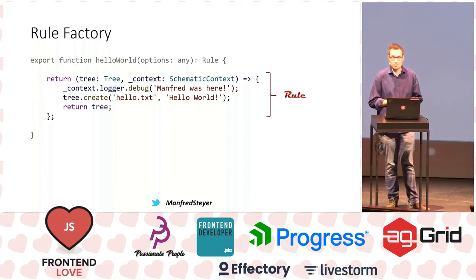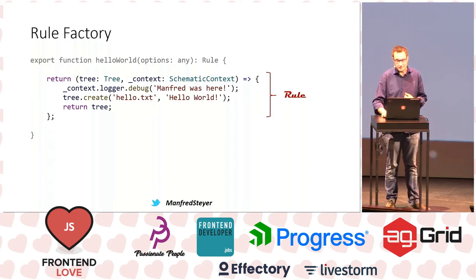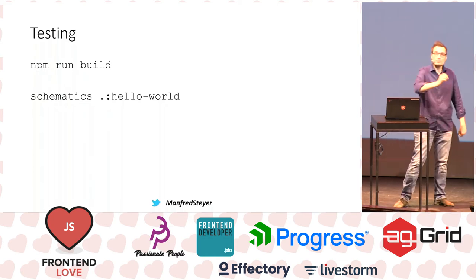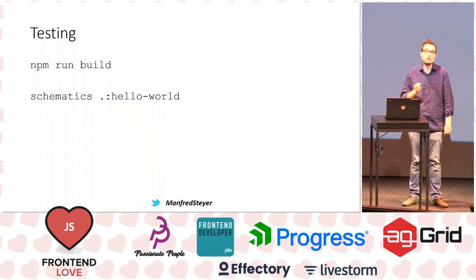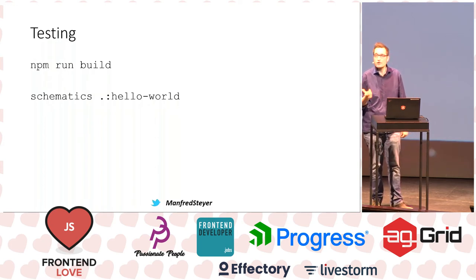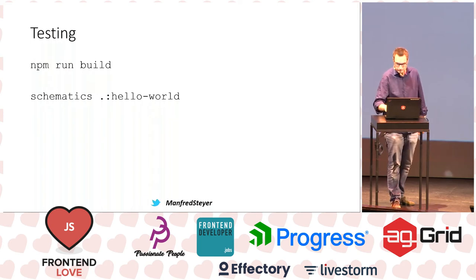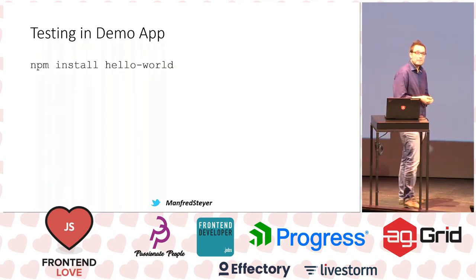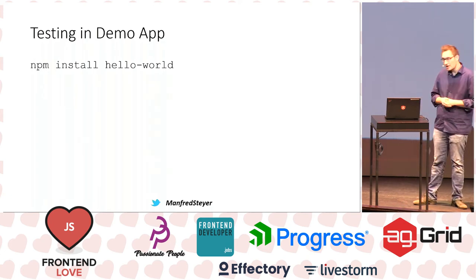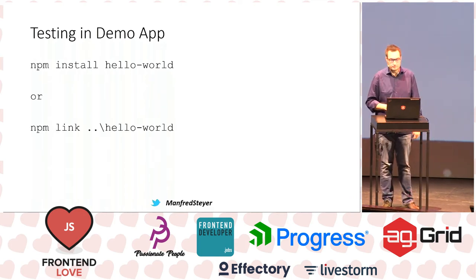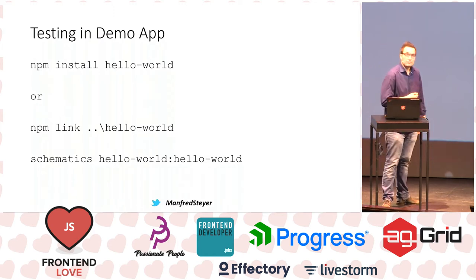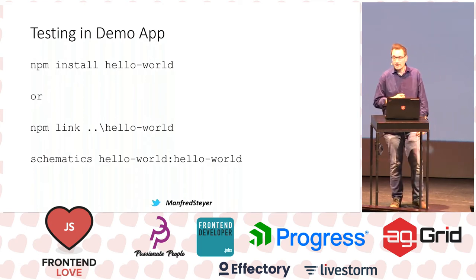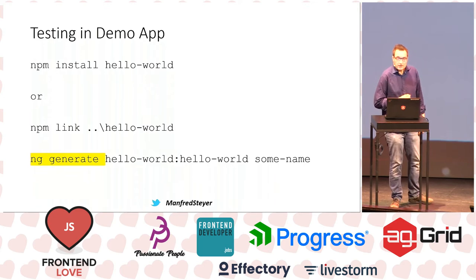This is just the rule I spoke about. When you have everything in place you can test it: just build it, and then call 'schematics .' — the dot points to the current project, meaning the current project is used as the collection — and 'hello-world' points to the code generator within the current project. You can also test everything within a demo application — for that you can npm install the whole collection within the demo application or use npm link, and then call schematics with the npm package name 'hello-world' and the name of the code generator, which is also 'hello-world'.